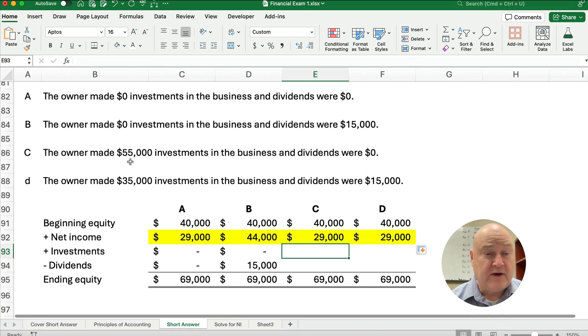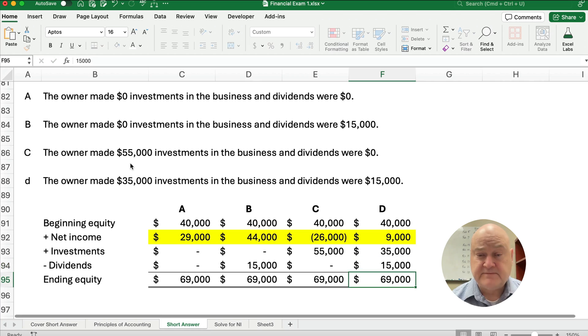Let's say the owner in item C made investments of 55,000. So 55,000, you see the net income changes and the dividends were zero. Well, then there must have been a loss. So item C, we have a net loss of 26,000. Or you put 26,000 in parentheses to show that it's a negative number. What if the owner made investments of 35,000 and dividends were 15,000? Well, our net income then is 9,000.